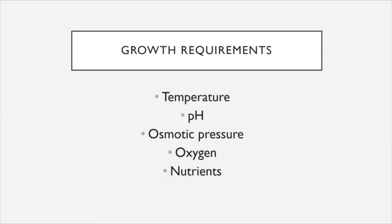Now that we've taken an overview of some of the different ways that microscopic organisms divide, we are going to look one by one at five categories of growth requirements that all microscopic organisms need. Those growth requirements have to do with environmental temperature, environmental pH, environmental osmotic pressure, environmental oxygen, and the availability of nutrients to the microbes. We'll start off by discussing temperature.